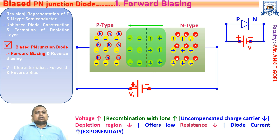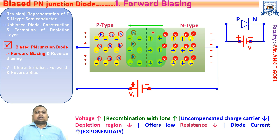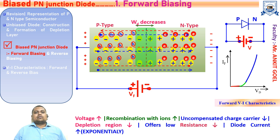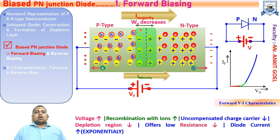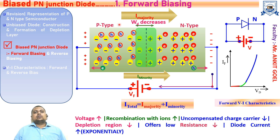Let us see how current will flow. This battery creates positive potential near the P-type semiconductor and negative potential near the N-type semiconductor. These potentials repel the majority carriers and push them into the depletion region, reducing the depletion region and offering low resistance. The diffusion process starts — majority carriers flow in the N-type and P-type semiconductor. When we increase the voltage, it compensates the ions in the depletion region, decreasing the depletion region further, which helps the diffusion process of majority carriers, and we get a diode current which rises exponentially with the increase in voltage.